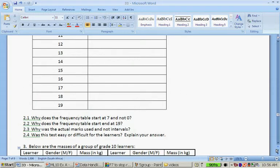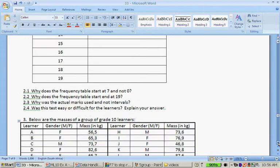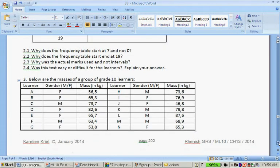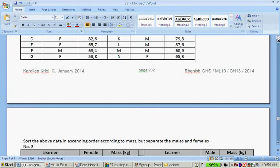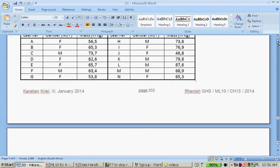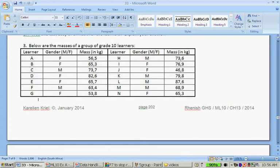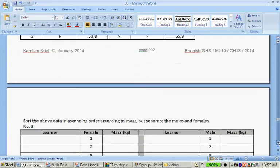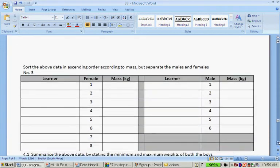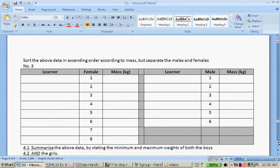Below are the genders, the masses of a group of grade 10 learners. The names of the learners are A through N, their genders, whether they're male or female, and their mass in kilograms. Sort the above data in ascending order according to mass, but separate the males and the females.